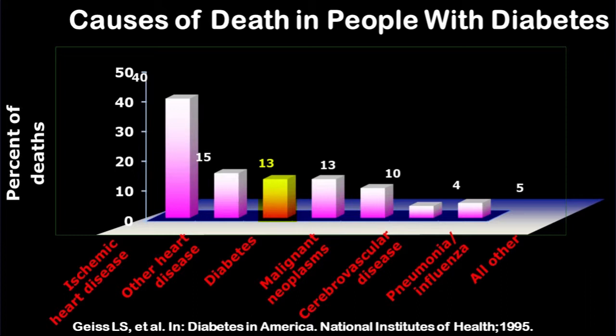Diabetes per se contributes around 13%, and then you have other diseases like malignant neoplasms, cerebrovascular disease, and pneumonia contributing to the rest. So the most important factor for death in people with diabetes is ischemic heart disease.